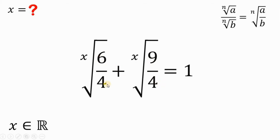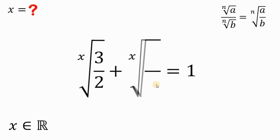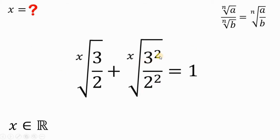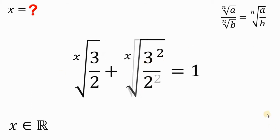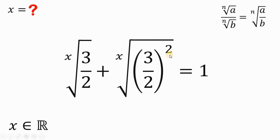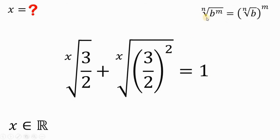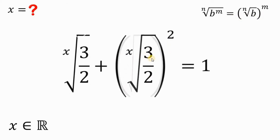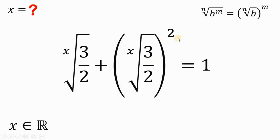Let's simplify: 6 over 4 is just 3 over 2. Now, 9 is 3 squared and 4 is 2 squared. And 3 squared over 2 squared can be written as 3 over 2 raised to the power of 2. Let's recall an identity: if we have the n root of b raised to m, it is equivalent to the n root of b raised to the power of m. Therefore, x root of 3 over 2 quantity squared can be written as x root of 3 over 2, quantity squared.